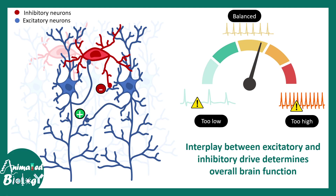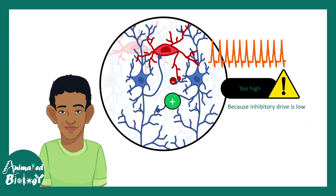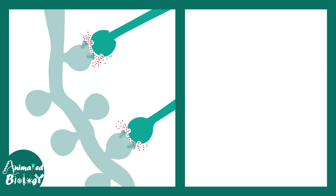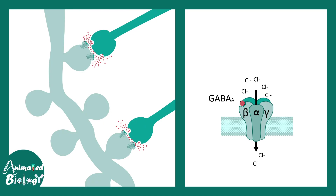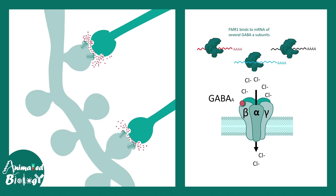Disruption of the excitatory-inhibitory balance alters the processivity of these circuits and often increases susceptibility to seizures. Part of the reason for uncontrolled activity is that GABAergic synapses — the inhibitory synapses — are somewhat non-functional. In the post-synapse of inhibitory synapses there are GABA-A receptors with several subunits, many of which are bound to FMRP in the normal scenario. When FMR1 mutation leads to faulty protein production, it reduces mRNA localization at synapses, altering GABAergic functionality. When the inhibitory drive is low, the excitatory drive is automatically high.